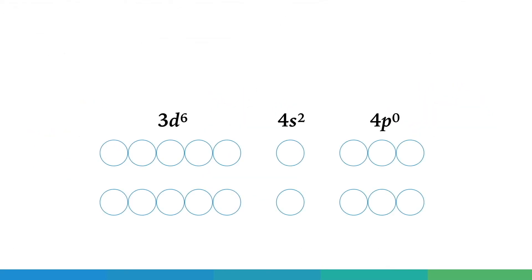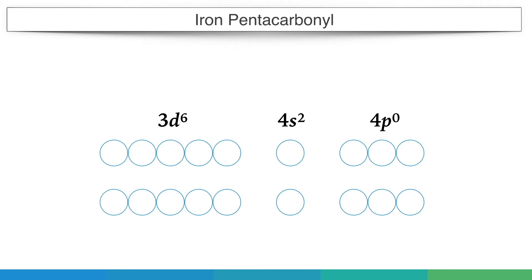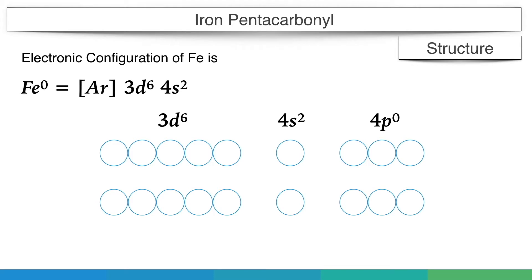So first is iron pentacarbonyl. In this case, there is only one iron atom. The electronic configuration of iron is argon 3d6 4s2.